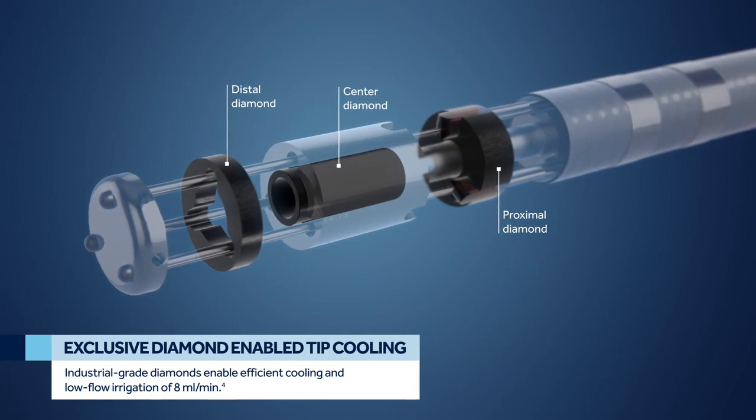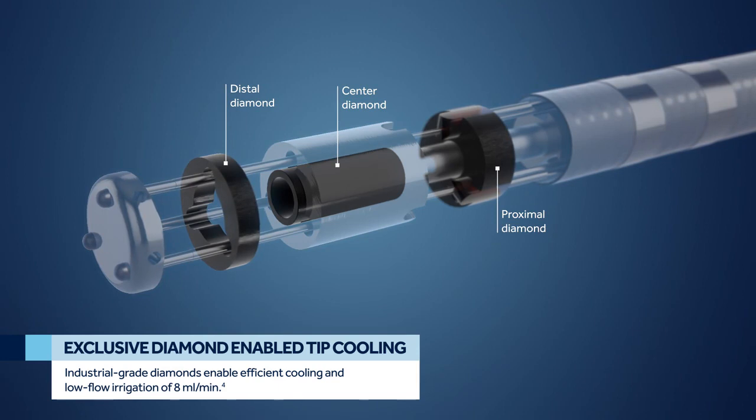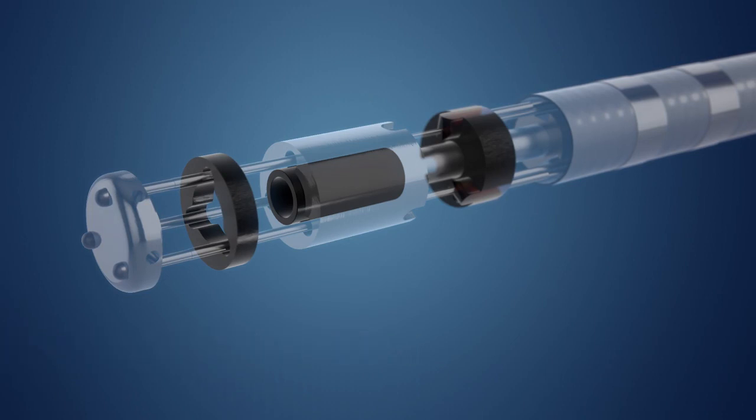The heat diffusivity property of CVD diamonds is 200 to 400 times faster than that of platinum iridium, driving efficient catheter tip cooling and a low irrigation flow rate of 8 milliliters per minute during ablation.